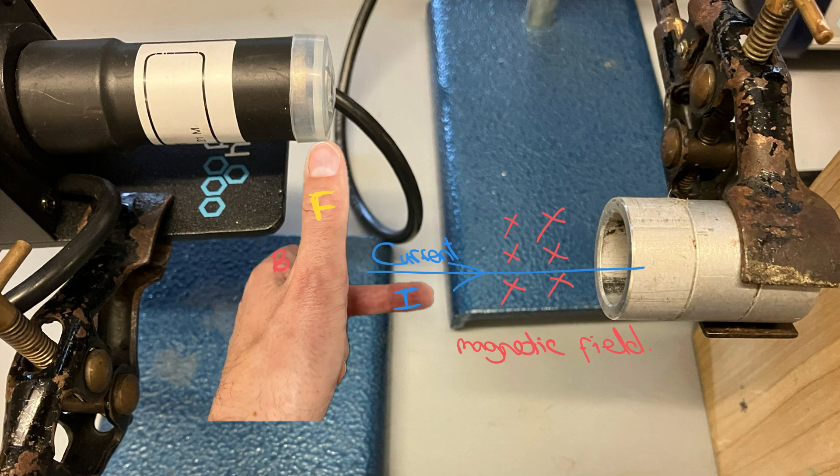We can apply Fleming's left-hand rule by pointing our first finger the direction of the magnetic field down into the screen. We can point our second finger in the direction of the current, which is this way, and that leaves our thumb pointing in the direction of the force, which is this way.